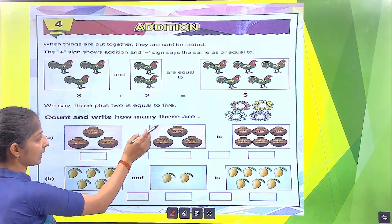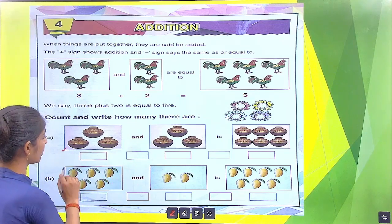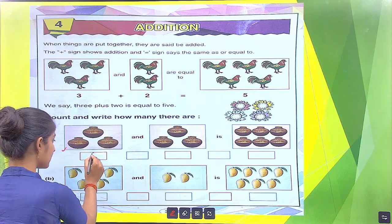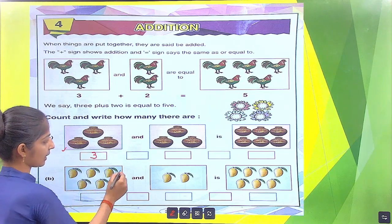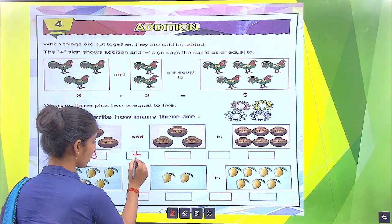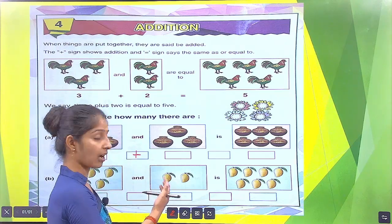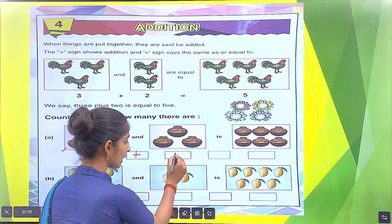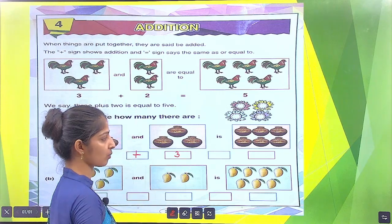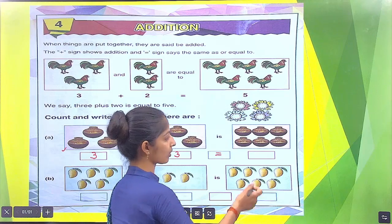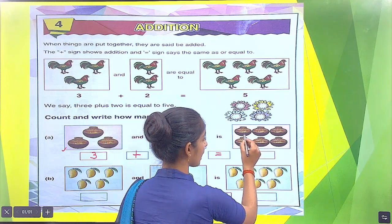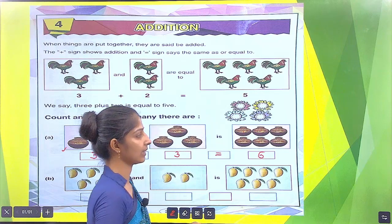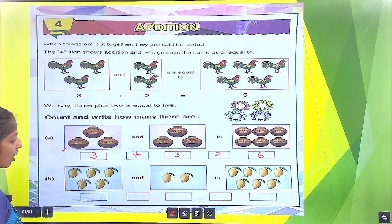Count and write how many there are. Count the parts in the first box — there are 3: 1, 2, 3. We put here 3. Here we put the symbol of addition. How many parts in the next box? There are 3: 1, 2, 3. Is equal to how many parts in the next box? There are 6: 1, 2, 3, 4, 5, 6.